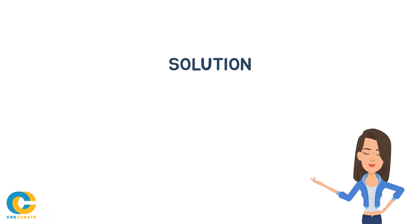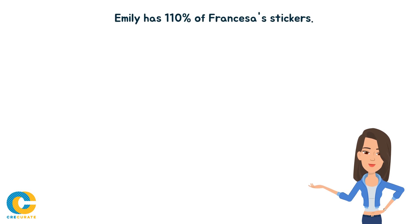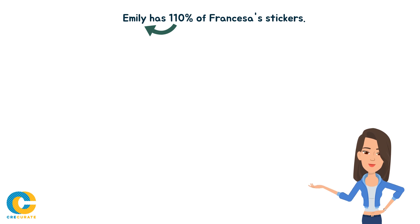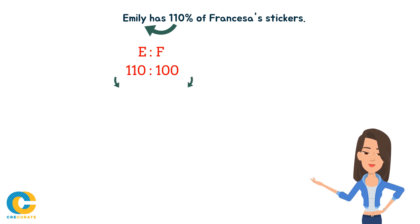Let's break down the word problem by reading and analyzing one sentence at a time. In the first sentence, we know that Emily has 110% of Francesca's stickers, which means that Francesca has 100%. By writing this as a ratio of the number of stickers Emily has to Francesca, we have 110 to 100. We can simplify this ratio by dividing both sides by 10, which gives us 11 to 10.